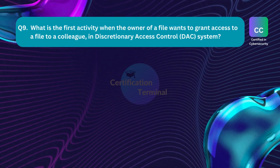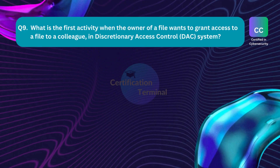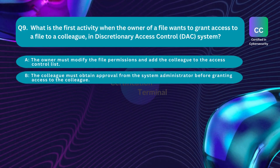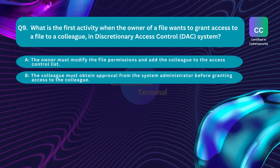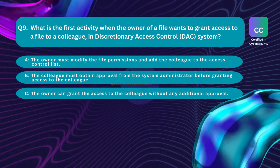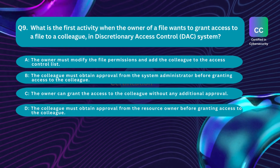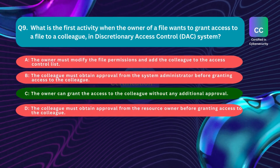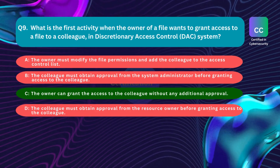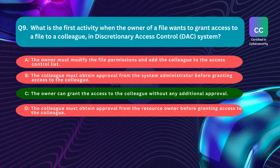Question number nine: What is the first activity when the owner of a file wants to grant access to a colleague in a Discretionary Access Control (DAC) system? Option A: the owner must modify file permissions and add the colleague to the access control list. Option B: the colleague must obtain approval from the system administrator. Option C: the owner can grant access without any additional approval. Option D: the colleague must obtain approval from the resource owner. The correct answer is Option C. In DAC, access policy is determined by the object's owner, so the owner can grant access to the colleague without any additional approval.